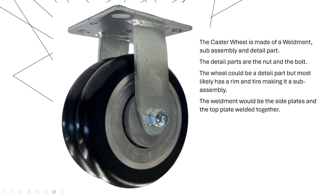The wheel would probably have a rim, a tire, and maybe a bushing on the inside — whatever that is becomes an assembly going into the final caster wheel assembly. You also have three pieces here: these two side plates and this plate on the top that gets welded right up in here.